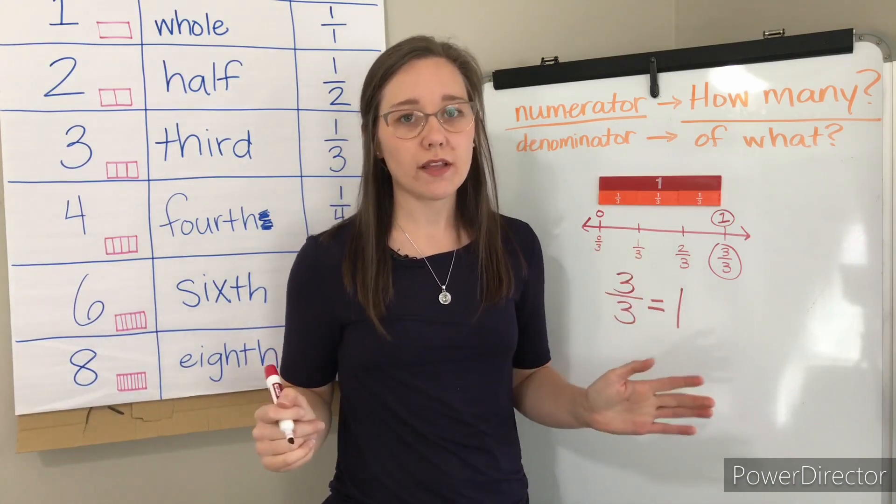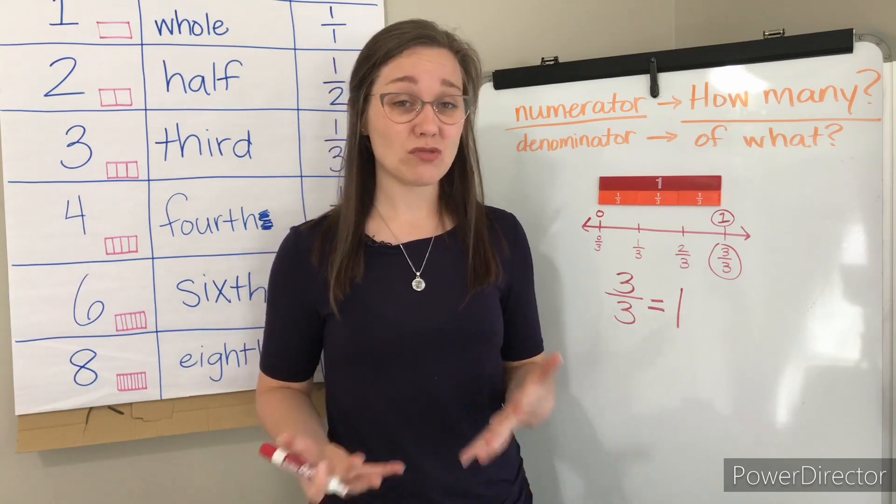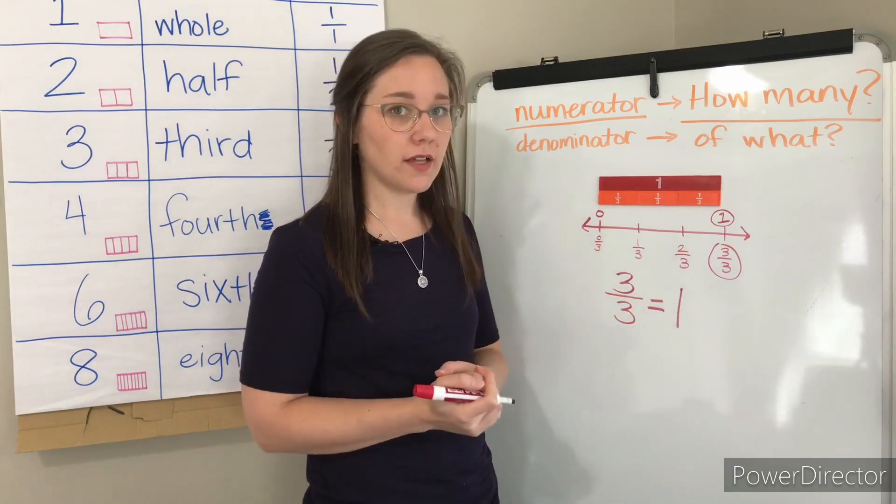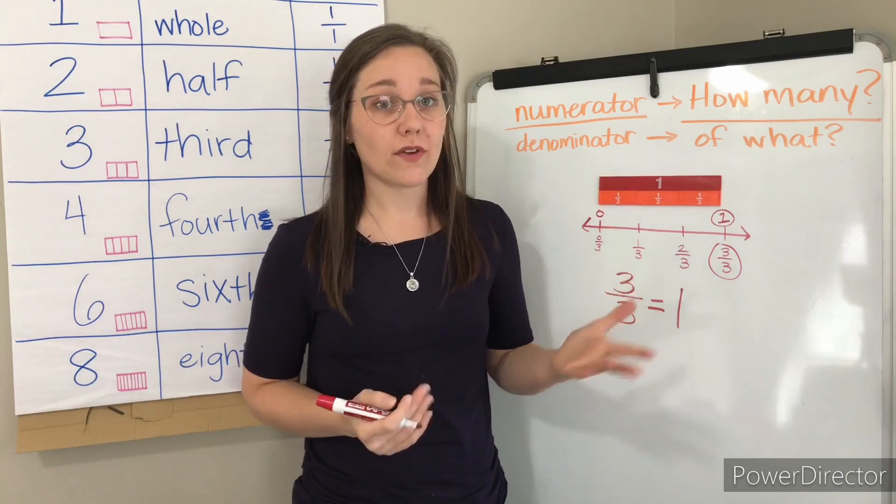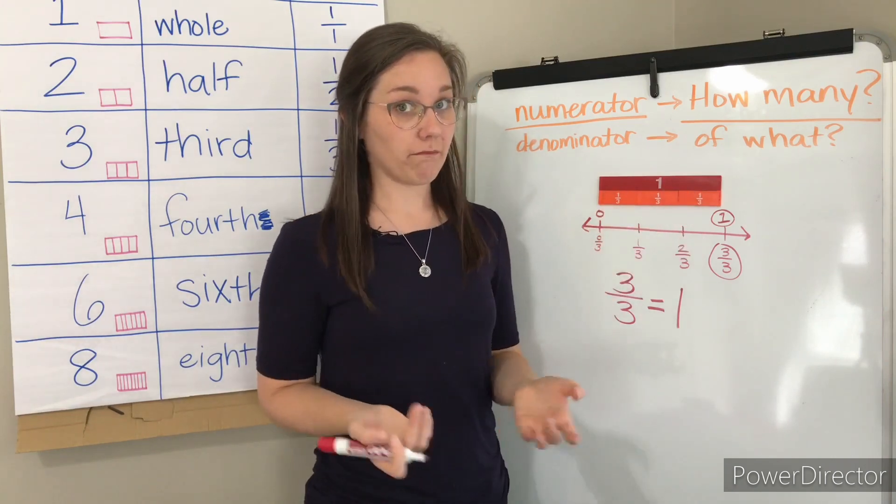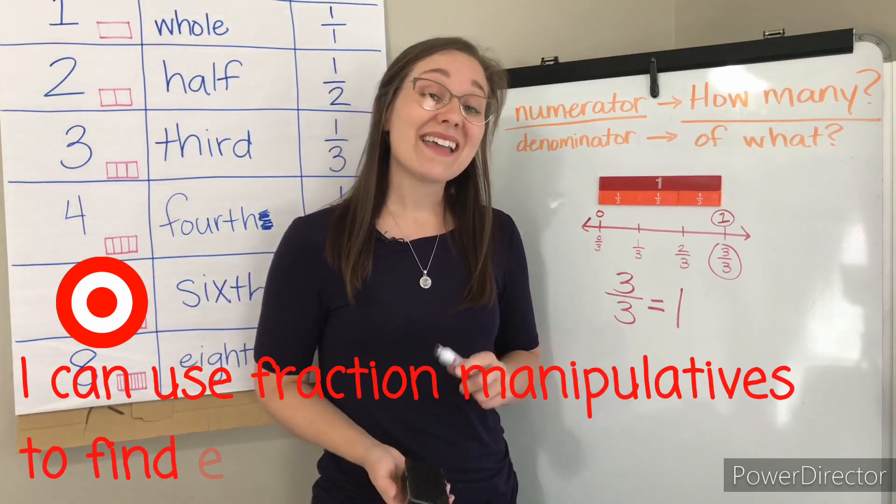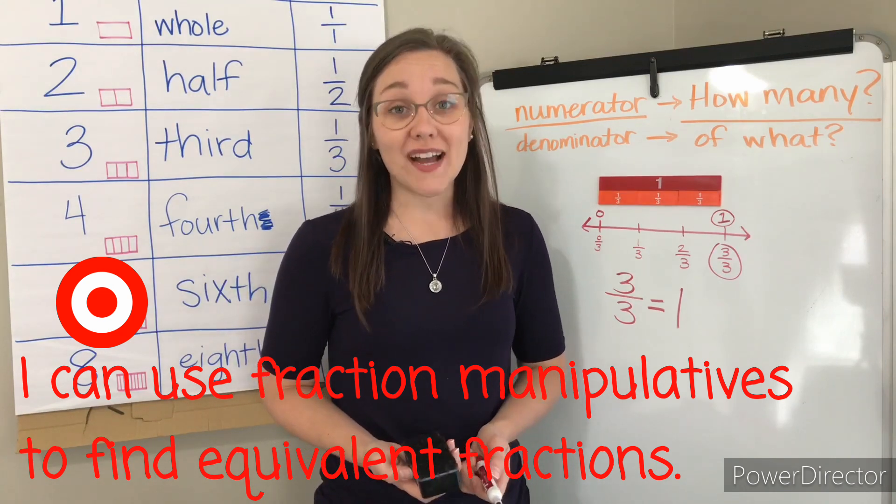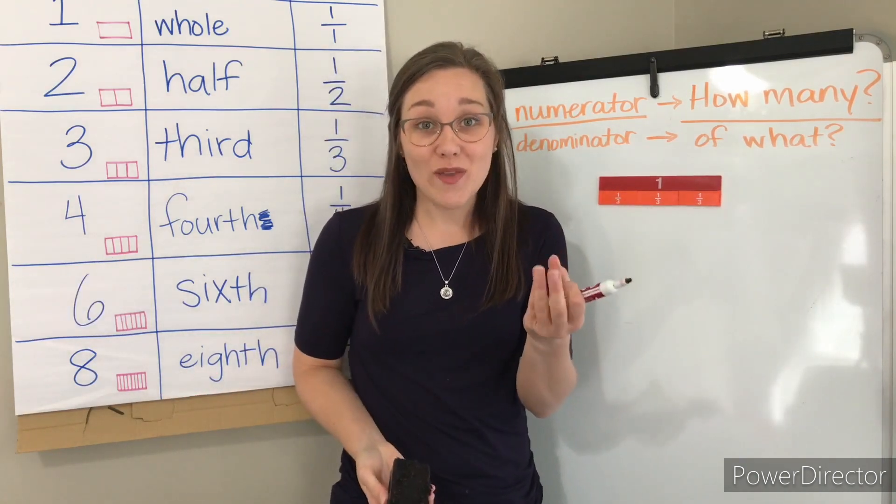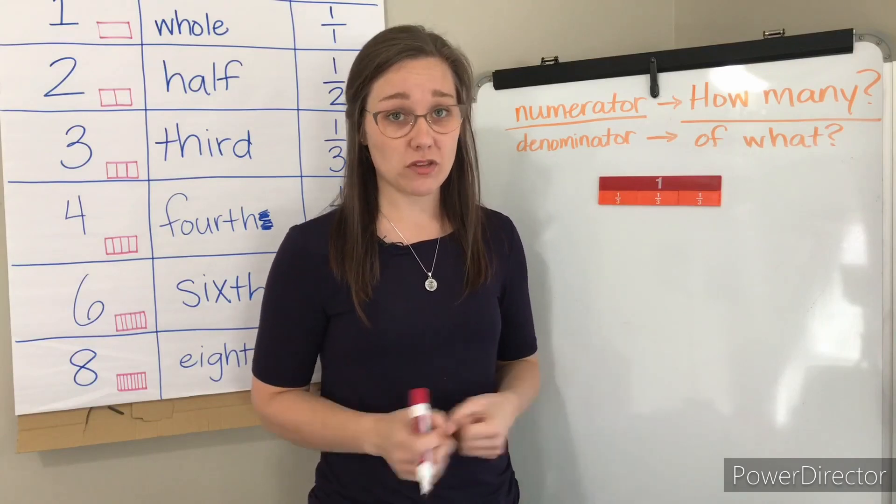When we have equivalent fractions, it means they are fractions that have the same value. They're worth the same amount. So, if I have 3 thirds, like we talked about, it's equal to one whole, which I can write as a fraction or a whole number. This is the same as this. Today and next week, we're going to talk all about equivalent fractions. We're going to talk about how to find equivalent fractions, and then even how to prove that two fractions, two numbers, are equivalent.